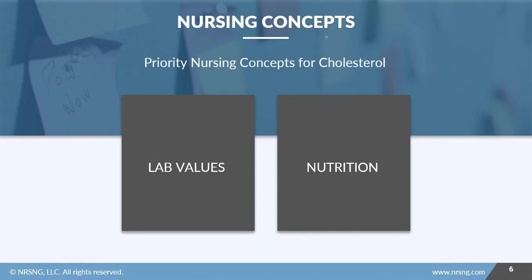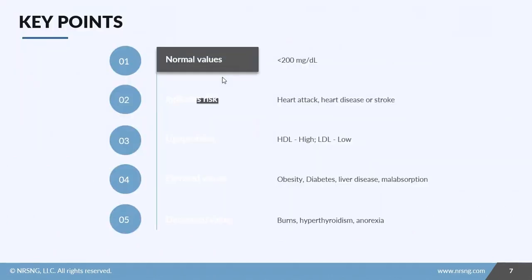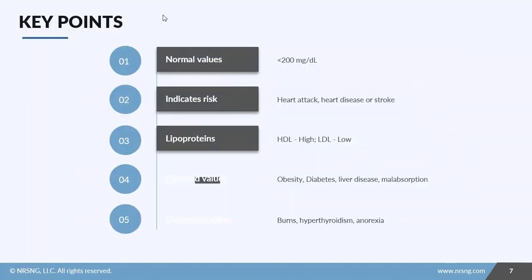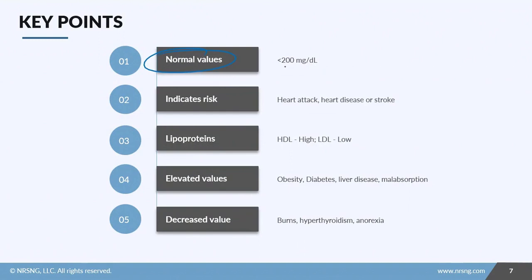For today's nursing concepts, when looking at cholesterol we focus on lab values and the patient's nutrition status. To recap: normal values for cholesterol are less than 200 milligrams per deciliter, and this test is an indicator for both future and current risk of disease — things like heart attack, heart disease, and stroke.